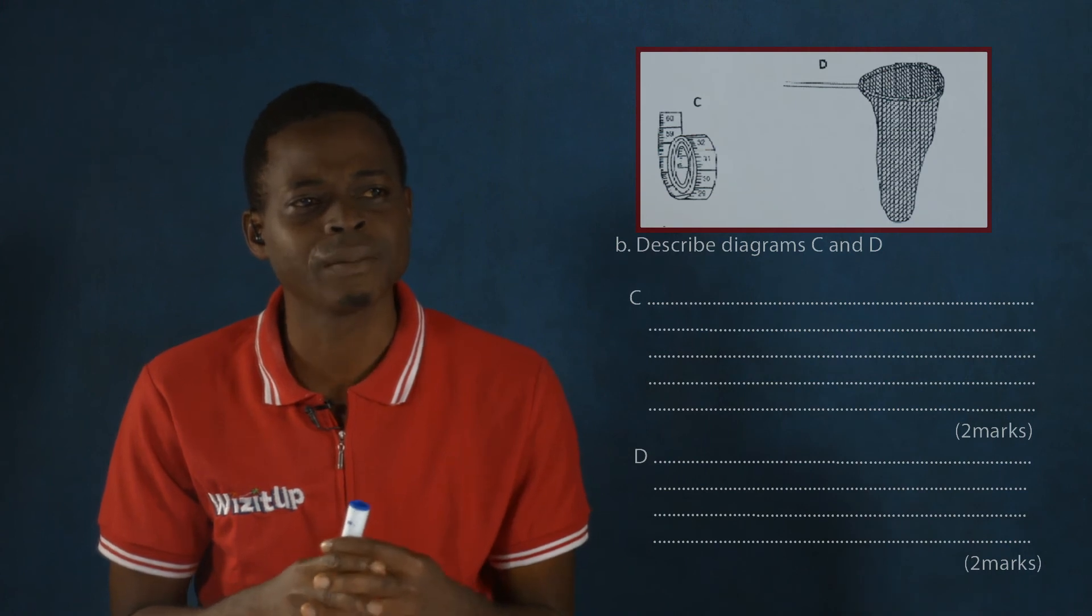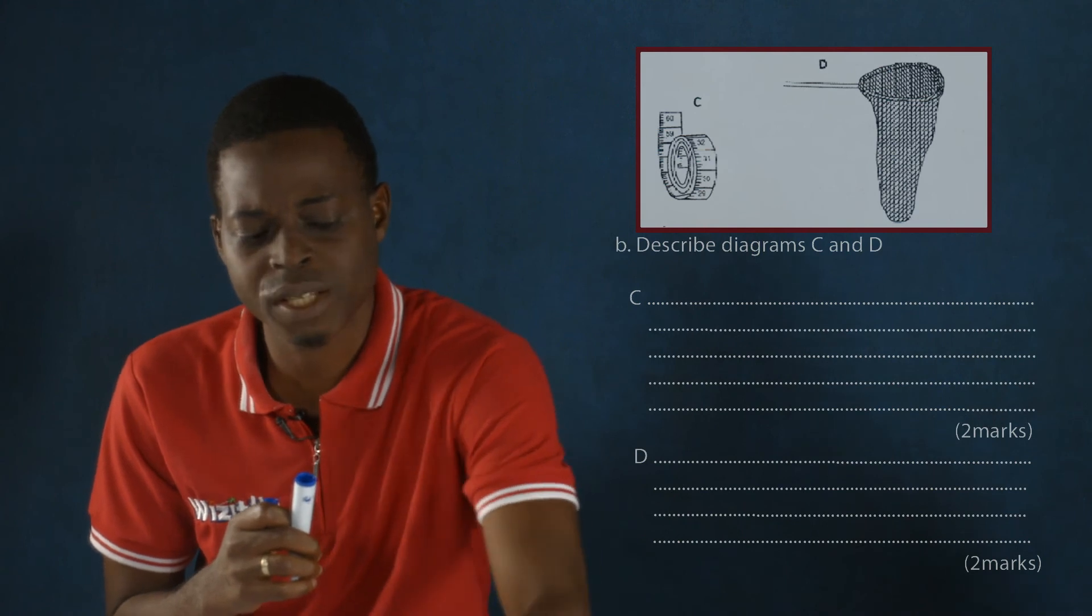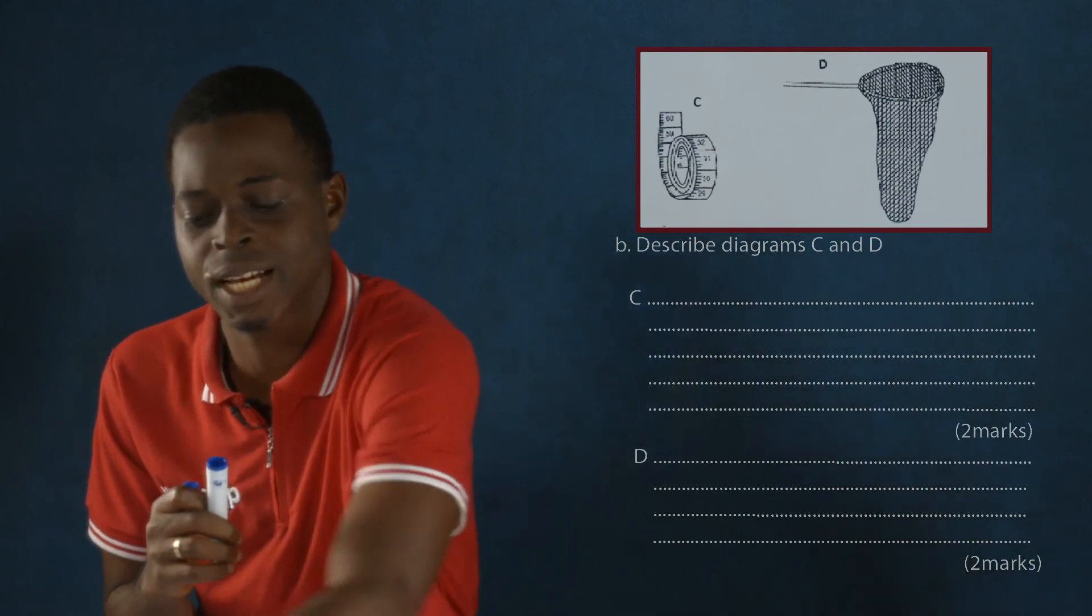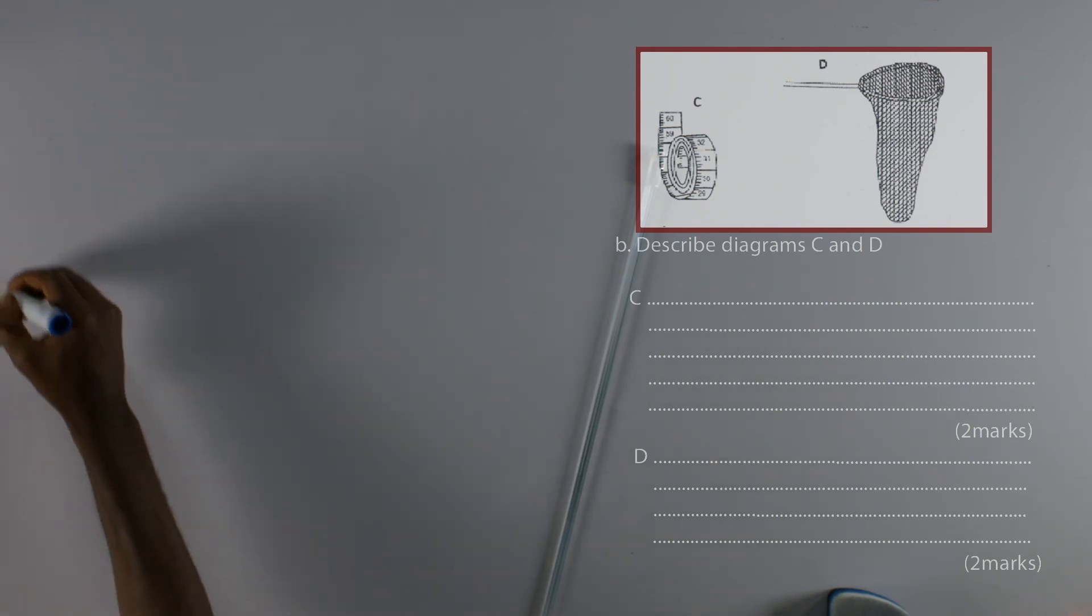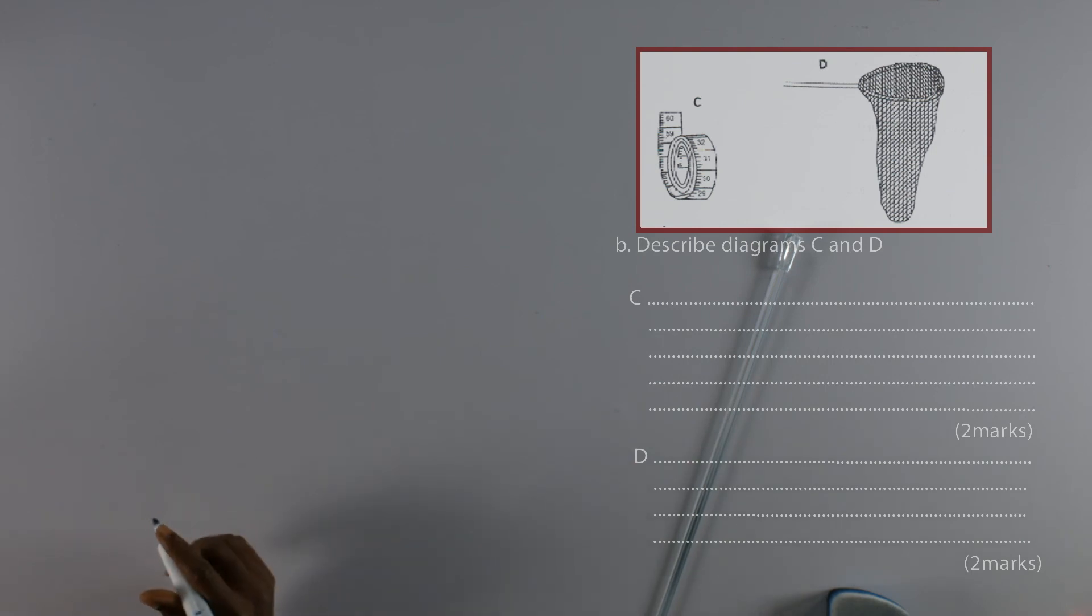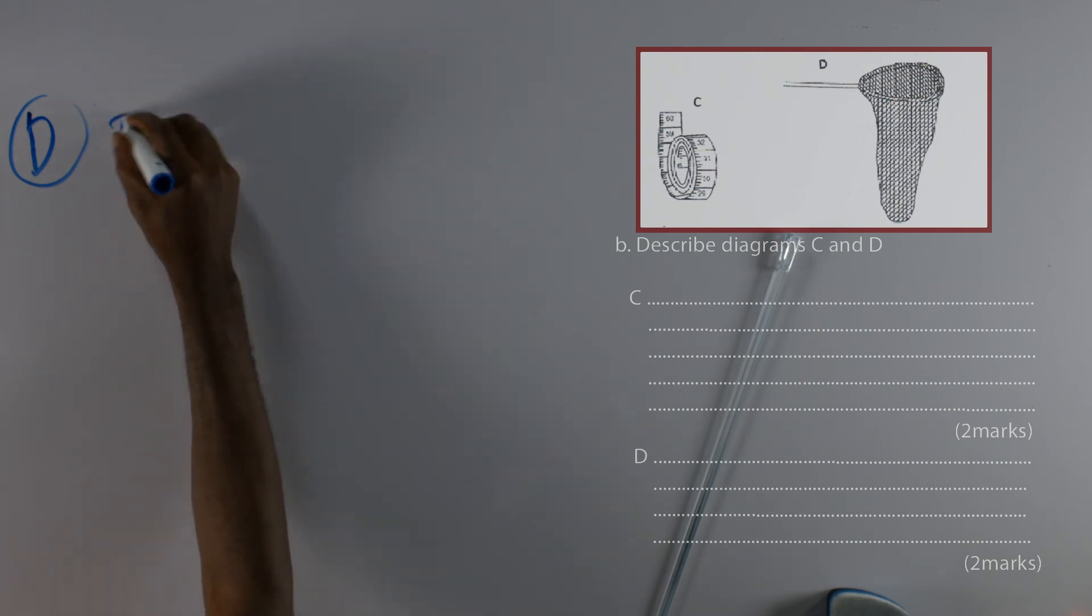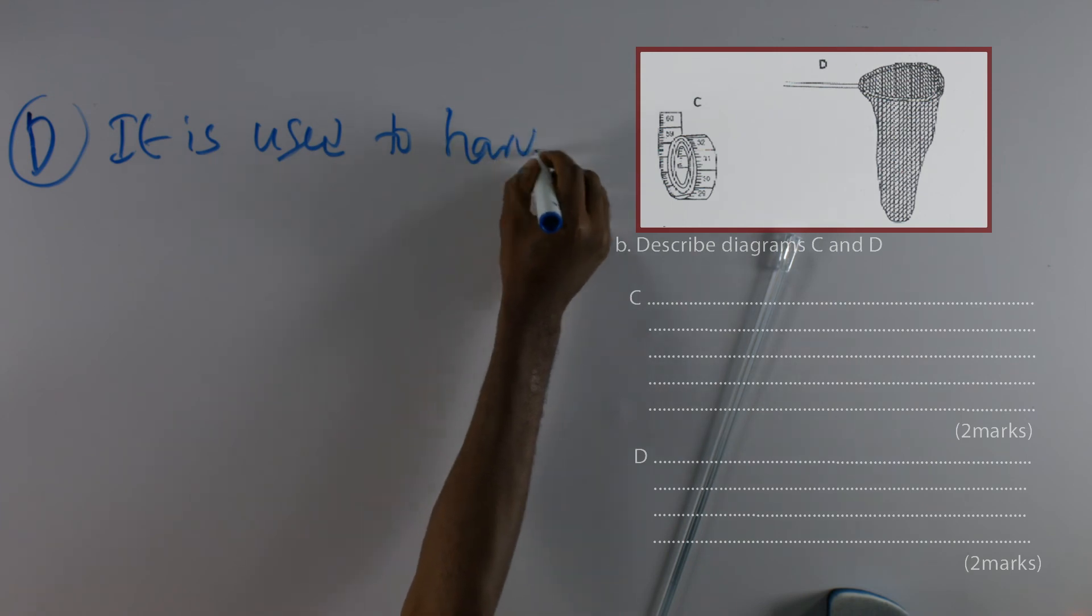Now let's go to D. If we are asked a question concerning D and looking at it, we identified it as the scoop net. So basically the scoop net is used to harvest fish.